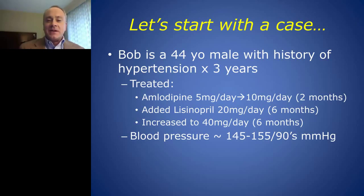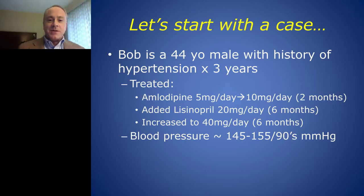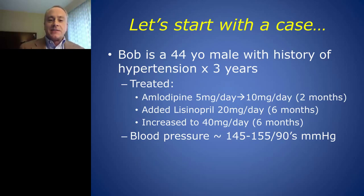I'd like to start with a quick case. I understand that there are likely some primary care providers as well as laboratory managers on the webinar today. Bob is a typical patient of mine. He's a 44-year-old male with a history of hypertension for the last three years. He was initially treated with a blood pressure medication called amlodipine, 5 milligrams a day, which was escalated to 10 milligrams over a two-month period. Since this failed to control his blood pressure, a second blood pressure medication was added, lisinopril, and it was increased over the following year. Despite these efforts, Bob's blood pressure remained uncontrolled.